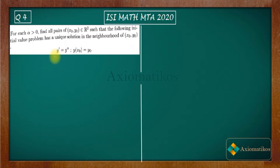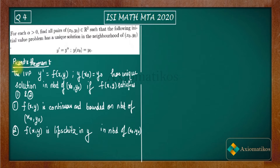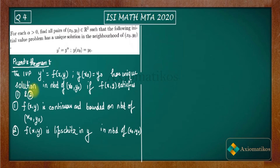Let me state Picard's theorem. The initial value problem has a unique solution in the neighborhood of the initial point (x₀, y₀) if f(x,y) satisfies two properties. These are the two properties that f(x,y) has to satisfy in order to find a unique solution for this problem.